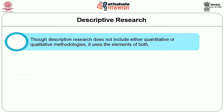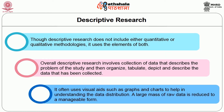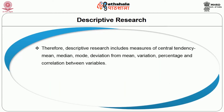Though descriptive research does not include either quantitative or qualitative methodologies exclusively, it uses the elements of both. Overall, descriptive research involves collection of data that describes the problem of the study, and then organizes, tabulates, depicts and describes the data collected. It often uses visual aids such as graphs and charts to help in understanding the data distribution. A large mass of raw data is reduced to a manageable form. Therefore, descriptive research includes measures of central tendency — mean, median, mode — deviation from mean, variation, percentage and correlation between variables.